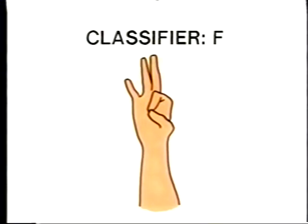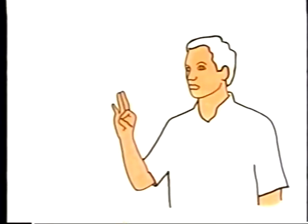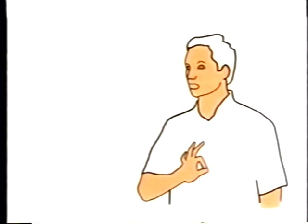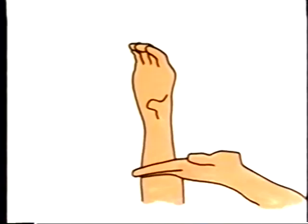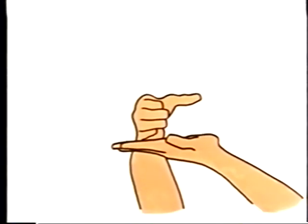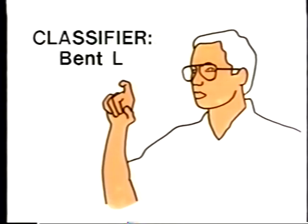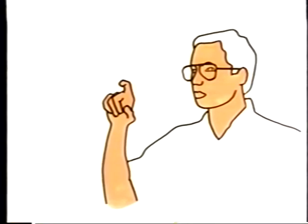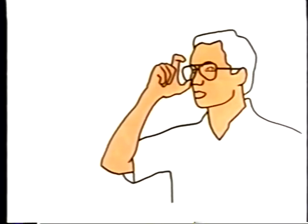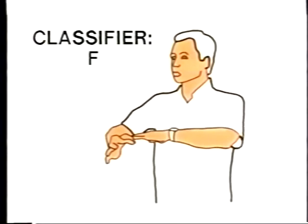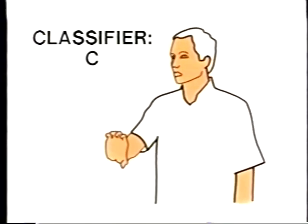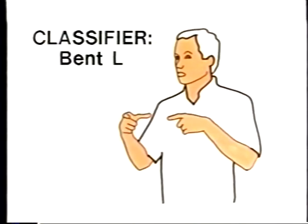Remember the classifier F — it is used for nouns with a small round shape, like 'button.' The classifier C is used for nouns to show a larger round shape, like 'cup.' The classifier Bent L is used for nouns to show a round shape too, like 'glasses.' Signs formed with these classifiers can be moved to show movement or location — for example, you can put your watch, a ball, or a plate on the table.